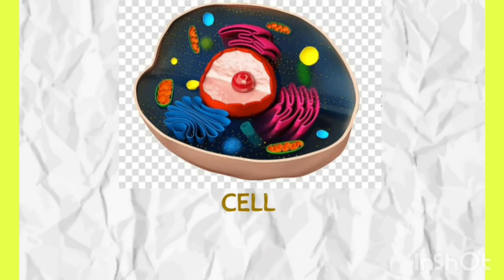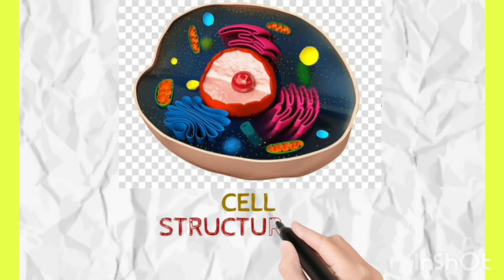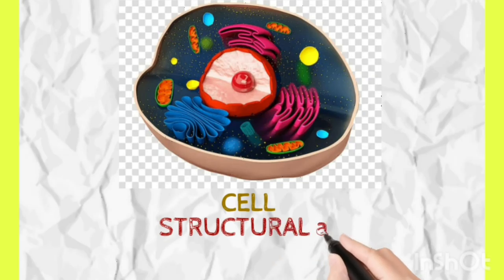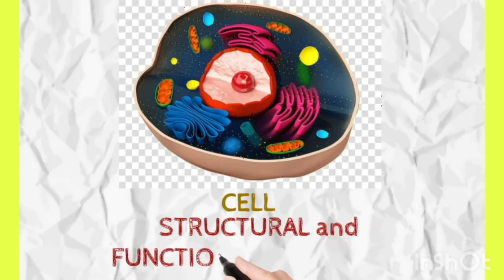Many cells combine to form a tissue, which forms an organ, and then organs form an organ system, and organ systems form our body. So basically, the cell is the structural and functional unit of our body.